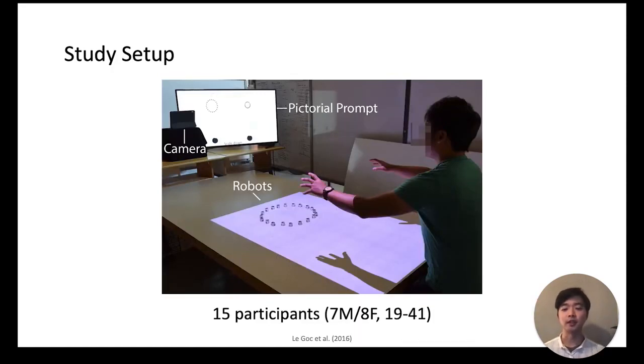To run the study we had the following setup: a TV monitor displayed a pictorial prompt and robots were placed on a table with the user standing next to them. For the robots we used Zooid platform from LocateLabs as they are small enough to allow manipulation of many robots with one hand and also fast enough to support real-time interaction.